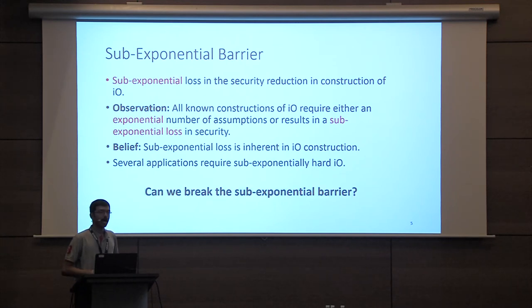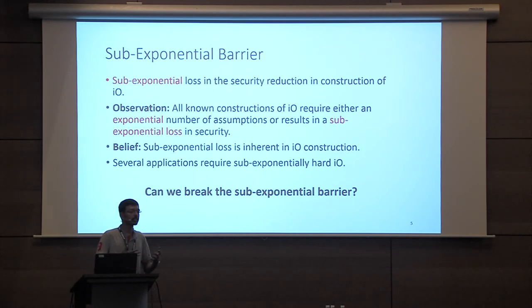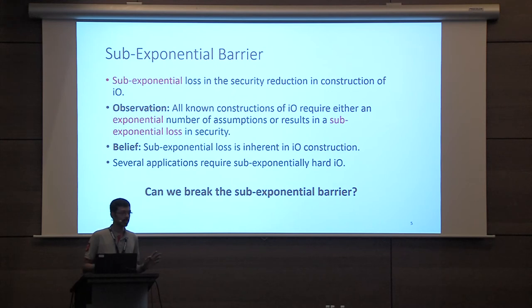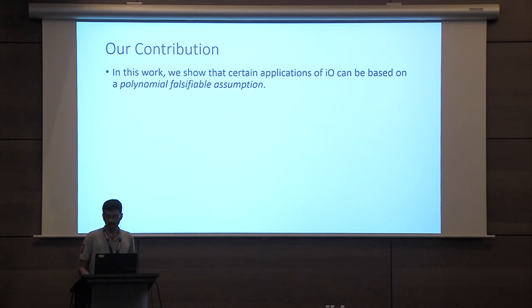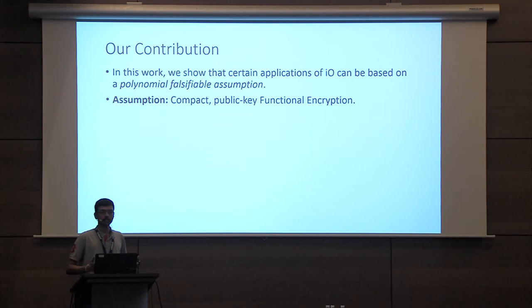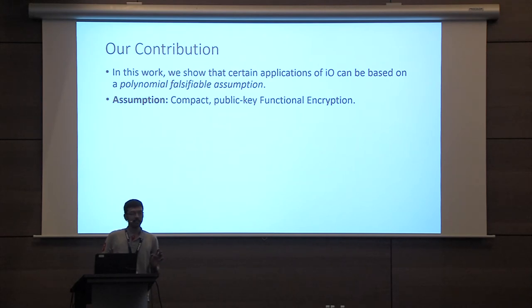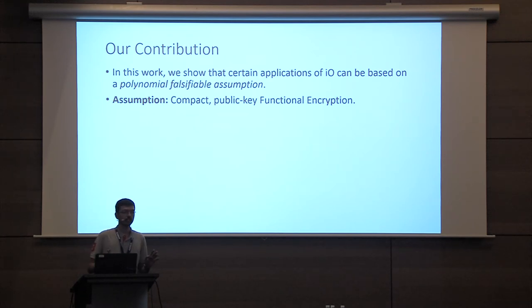The question we ask in this work is: is this sub-exponential loss inherent to constructing applications of IO as well, or can we somehow circumvent this sub-exponential barrier for certain applications? We show that certain applications can in fact be based on a polynomial falsifiable assumption. The assumption we use is the existence of compact public key functional encryption, and we know constructions of compact public key functional encryption from polynomial hardness assumptions on multilinear maps, whereas all known constructions of IO require sub-exponential hardness assumptions.